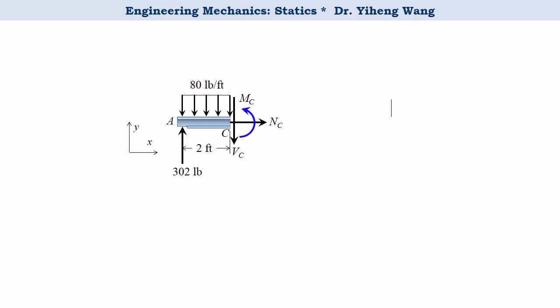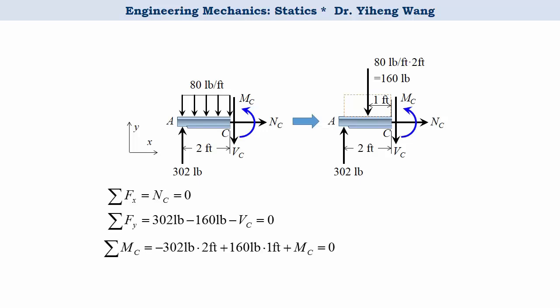Now we run an imaginary cut through point C and analyze the left segment. We draw the three internal forces according to the sign convention: normal force, shear force, and bending moment. We need to replace the distributed load by an equivalent concentrated load. Now we set up the rigid body equilibrium equations and solve for all three unknowns.